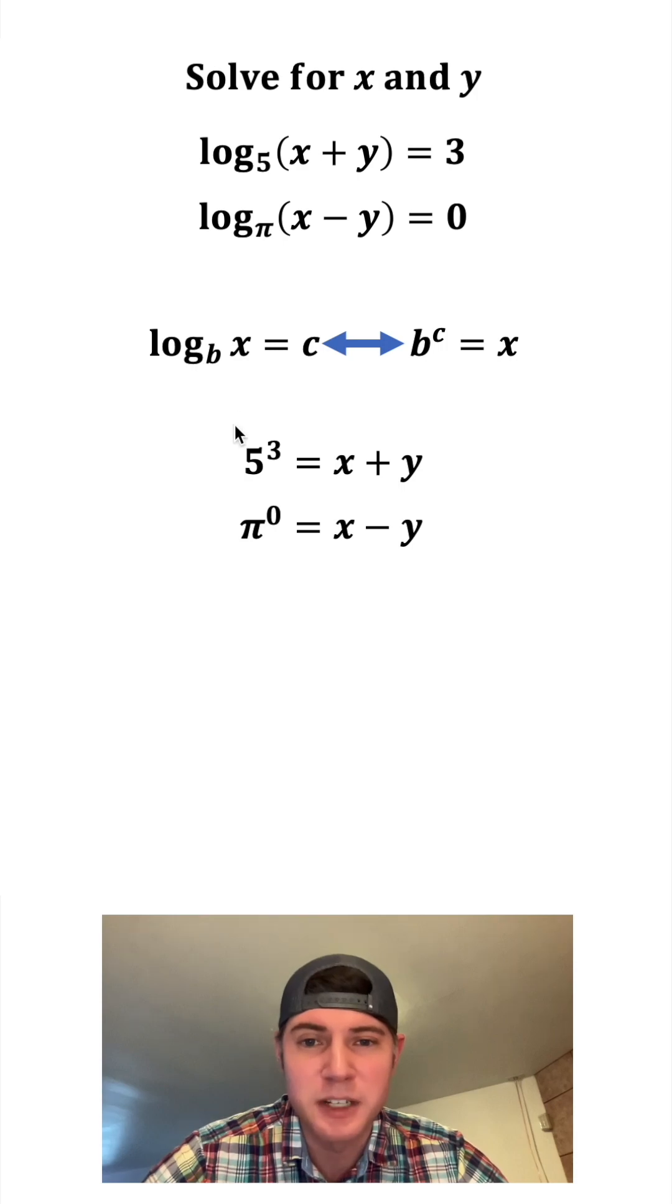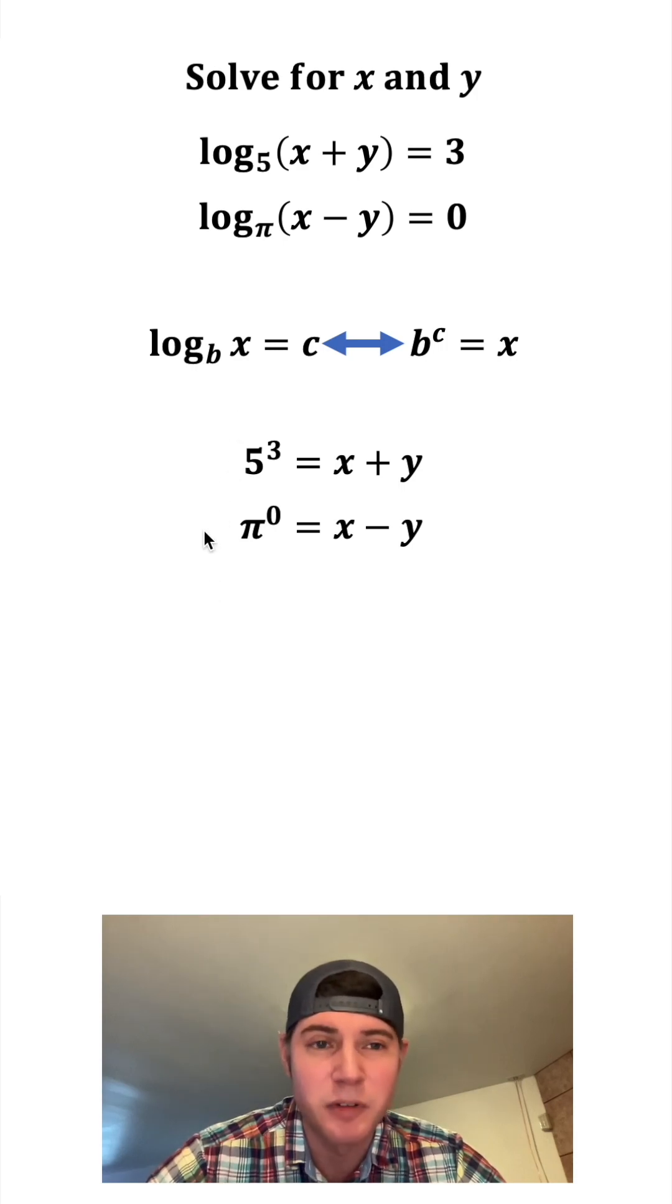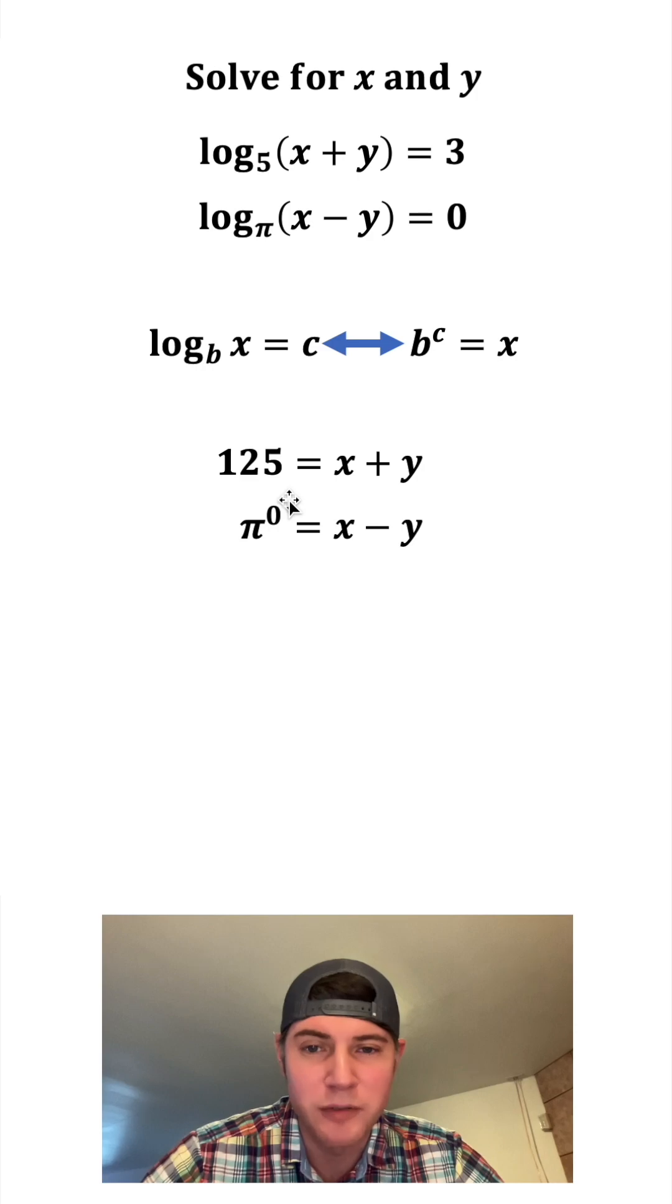Now that we've rewritten the logarithms in exponential form, this is just a system of linear equations. 5 cubed is equal to 125 and pi to the 0 is equal to 1. And then we can use elimination to solve for x and y.